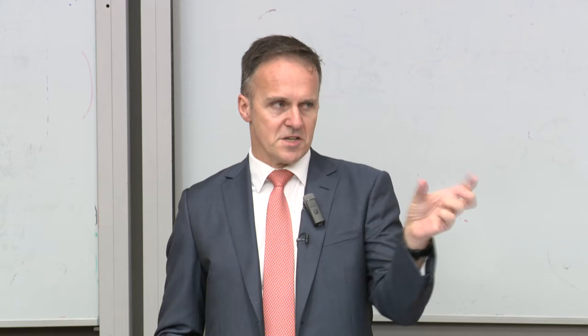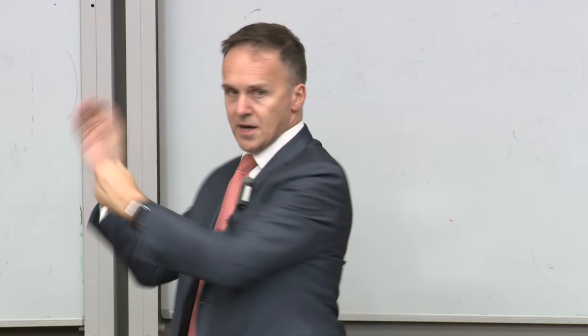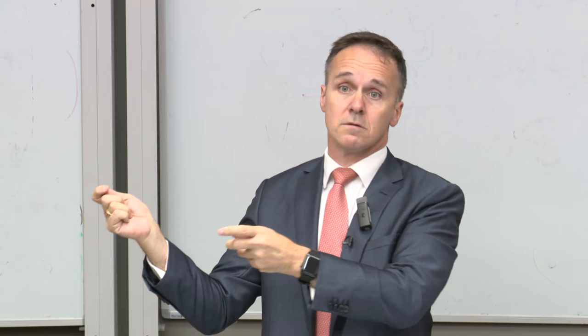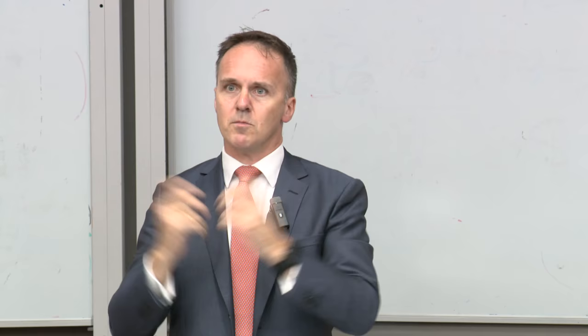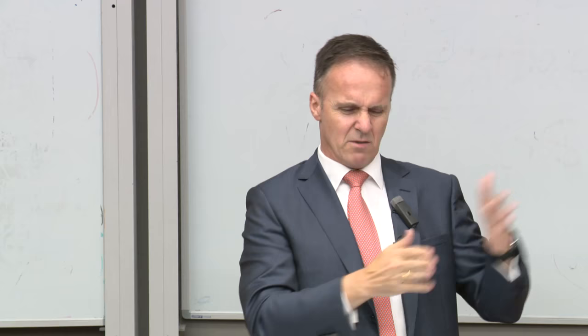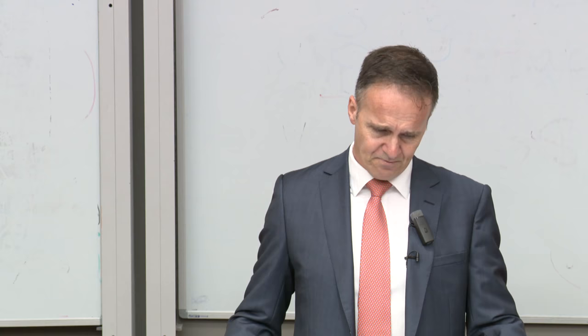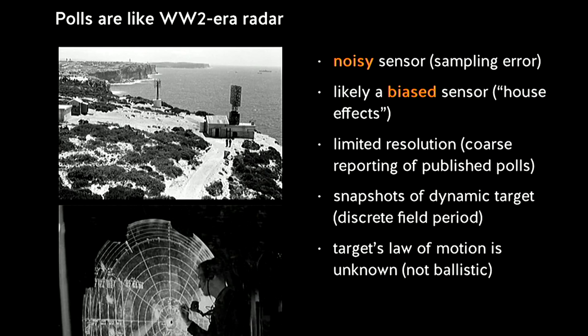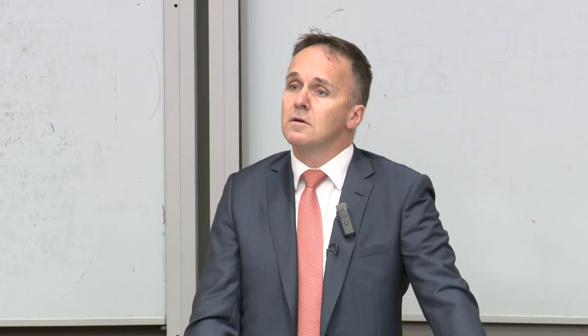The coarsening error from rounding to integers in published polls is small relative to sampling error, so we don't worry much about that. The key thing is that polls are a snapshot — like the radar beam swinging around, seeing the target, and then swinging off. The poll is live for its field period and then stops. By the time it's in the public domain, the data are somewhere between 24 and 72 hours old. And the underlying target is moving in continuous time, but with what law of motion? Nobody knows.